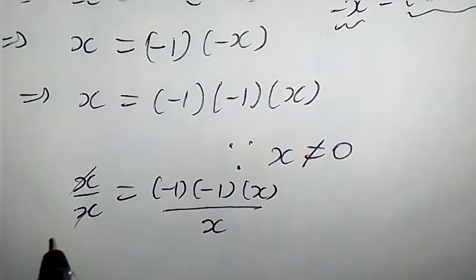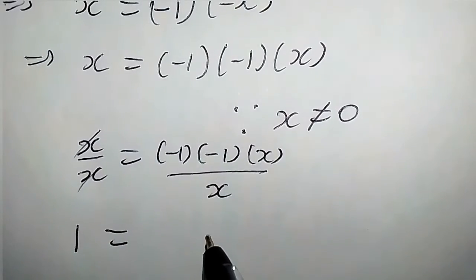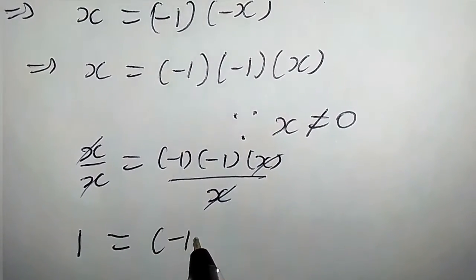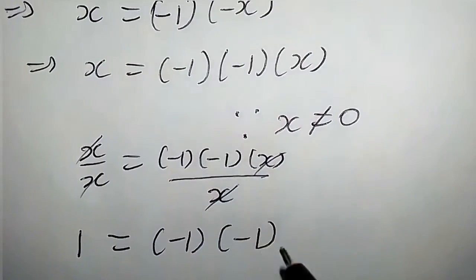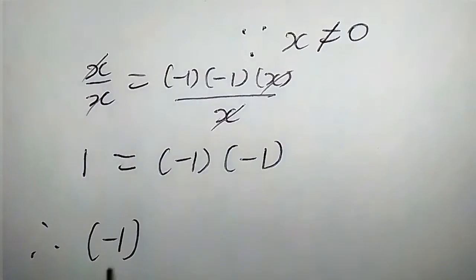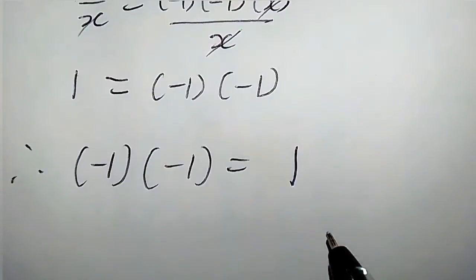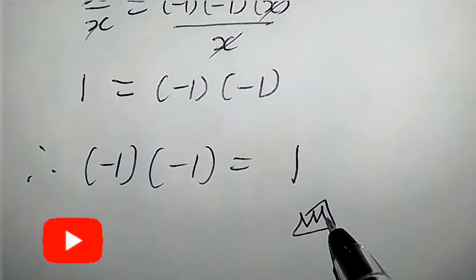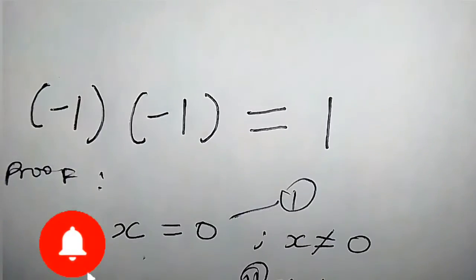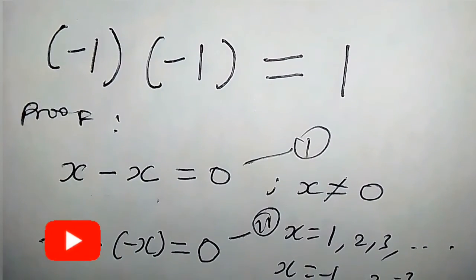Of course, x over x on the left side gives 1, and likewise x cancels x on the right side, so we are left with negative 1 times negative 1. Therefore, negative 1 times negative 1 equals 1, which is the required result. We have just proved this mathematical statement. Thanks for watching.